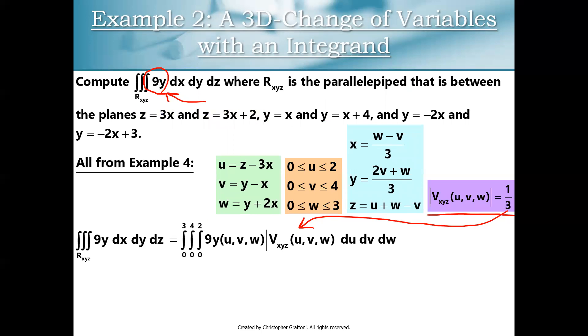And then the only thing that's really new in this example is 9y is going to become 9 times y(u, v, w). We're going to have to do a little bit of substituting here. So y(u, v, w) is this 2v + w over 3. We're going to have to plug that in for y. So let's do that right now. There it is.